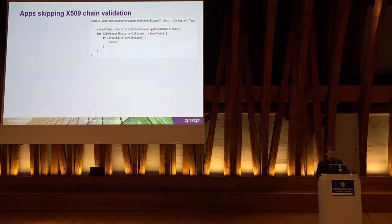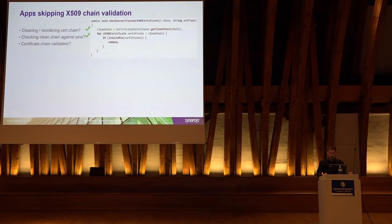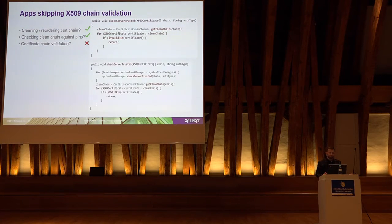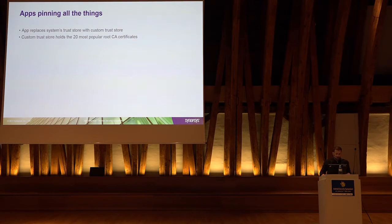Another pattern: a CheckServerTrusted implementation that has a chain cleaning function and checks pins against the clean trusted path — it cleans the chain and checks pins against it. Does it do certificate validation? No. It doesn't actually validate that the chain is okay. It doesn't call the original implementation of CheckServerTrusted. That part is missed entirely. Another misunderstanding: applications replace the trust store holding 150 certificates with another holding 20 of the most popular certificates. What does that buy you? Ideally, you should only pin to the certificate authority you care about that is in your path, and maybe a backup one.